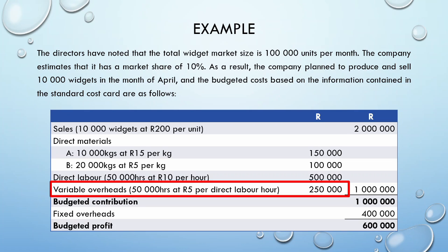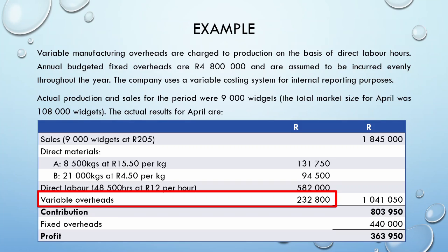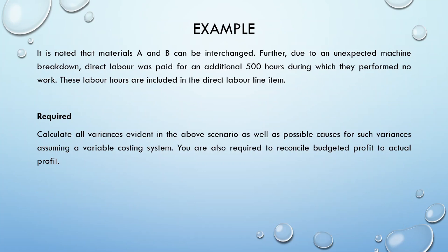If we focus on the variable overheads, we see that we budgeted 50,000 hours at 5 Rand per direct labor hour. Always pay careful attention to the cost driver. For the variable overheads, under the actual information, we are only given the total value of 232,800 Rand. The final slide provides us with no additional information on the variable overheads.